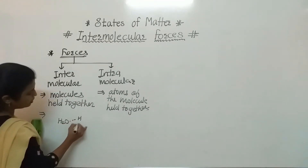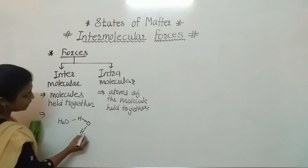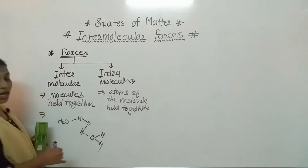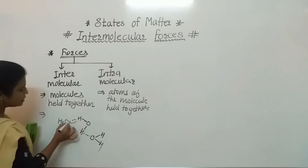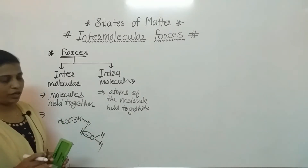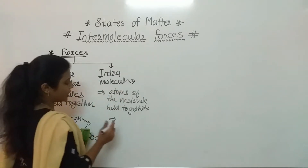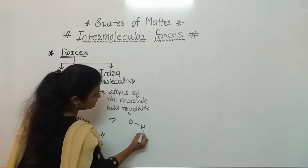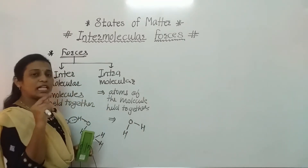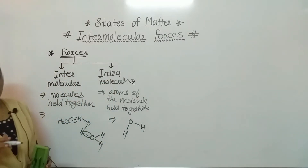For example, in a water molecule, the oxygen of one molecule is bonded with the hydrogen of another water molecule — that is nothing but intermolecular bonding. If we consider intramolecular bonding, within a water molecule, oxygen and hydrogen atoms are held together by the intramolecular force.